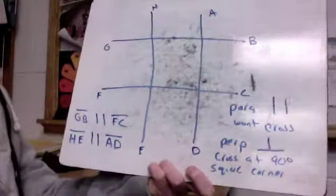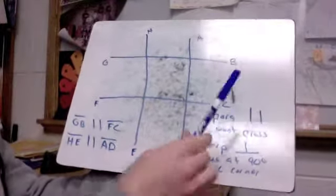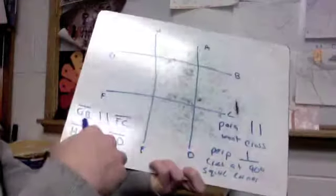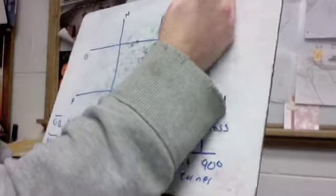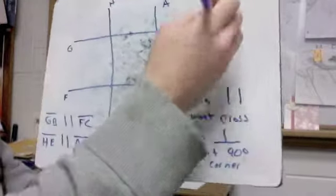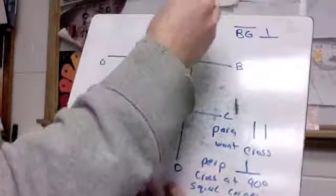Now for perpendicular let's get a couple of those. Let's go BG which is the same thing as GB. We could just write it backwards. BG is going to be perpendicular to AD. So I can put that there AD.